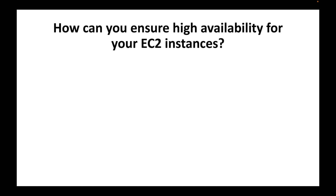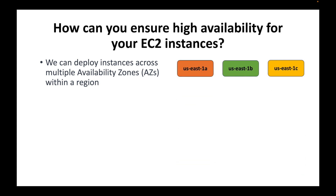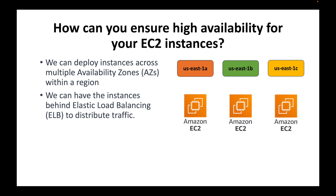The next question is: how can you ensure high availability for your EC2 instances? First, deploy your instances across multiple availability zones. If you have three instances, run each in a different availability zone. Then, place these instances behind a load balancer — such as an Application Load Balancer or Network Load Balancer — to distribute traffic among the instances. This ensures your application is highly available and can handle the user load.